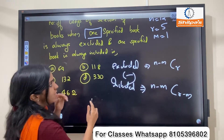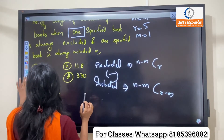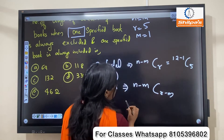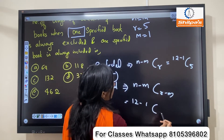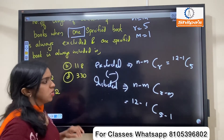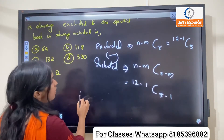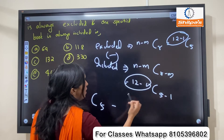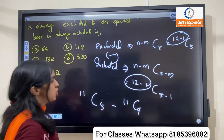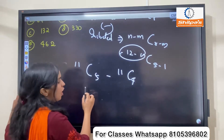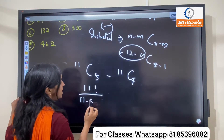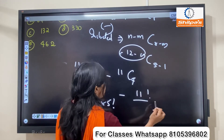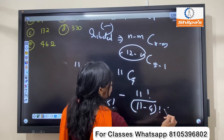Shortcut — direct substitution here. Substitution: 12 minus 1 C5, and 12 minus 1 C5 minus 1. So the value in the first term is 11C5, and the next one is 11C4. Then we need subtraction: 11C5 = 11 factorial by 6 factorial into 5 factorial, minus 11C4 = 11 factorial by 7 factorial into 4 factorial.